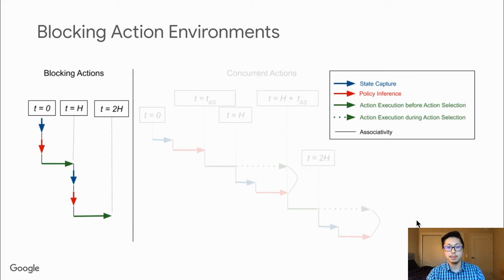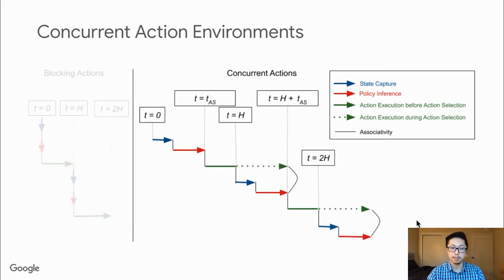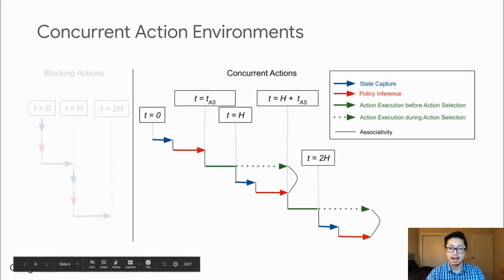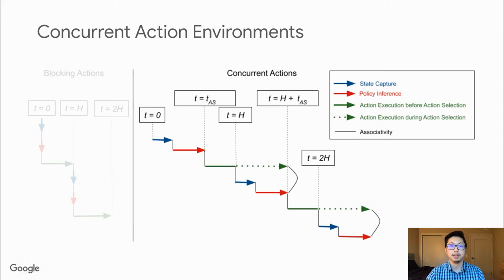In contrast, in more realistic concurrent action environments, we no longer have the luxury of instantaneous state capture and policy inference. Instead, when we observe state and run inference, the environment continues to evolve. As our agent thinks of the next action to send, the previous action continues to affect the environment.